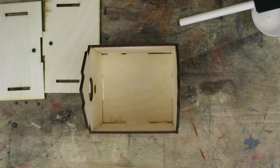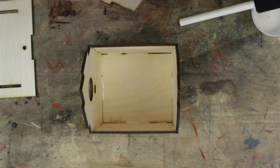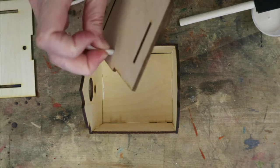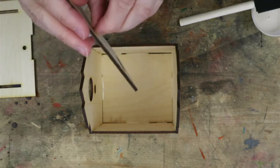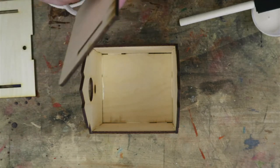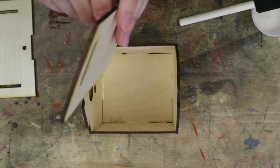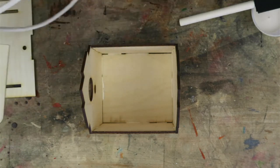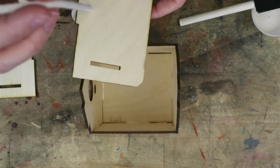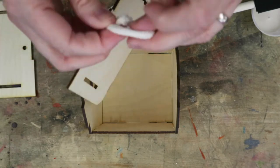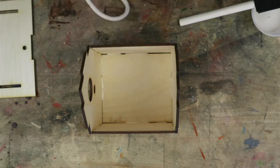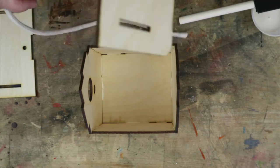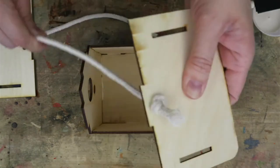All right. Now, what you can do is push that through the hole in a roof piece. Now, if you tie a knot on the end, you'll see that it holds it nice and strong.